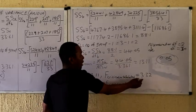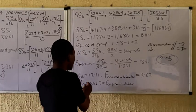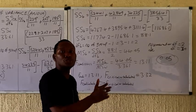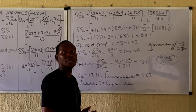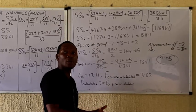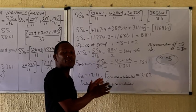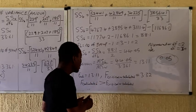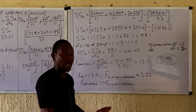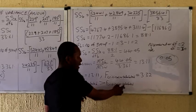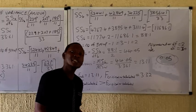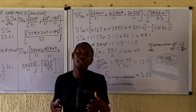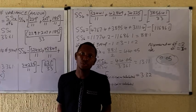Since the F-calculated value of 13.11 is greater than the F-critical value of 3.32, we reject the null hypothesis. This means there is a significant difference between the results of Treatments A, B, and C — the difference is not by chance. If F-calculated were less than F-critical, you would accept the null hypothesis, meaning no significant difference. This is how to use ANOVA to solve biostatistics questions.